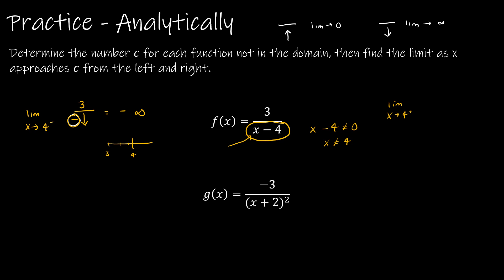Now, the limit as x approaches 4 from the right: we're looking at values to the right of 4 on the number line — 4.1, 4.2, etc., up to 5, so values greater than 4. If they're greater than 4, I'll have, say, 5 minus 4 which is 1, or 4.1 minus 4 which is 0.1. These values will continue to decrease, but they will be positive values, which means we're looking at a positive result.